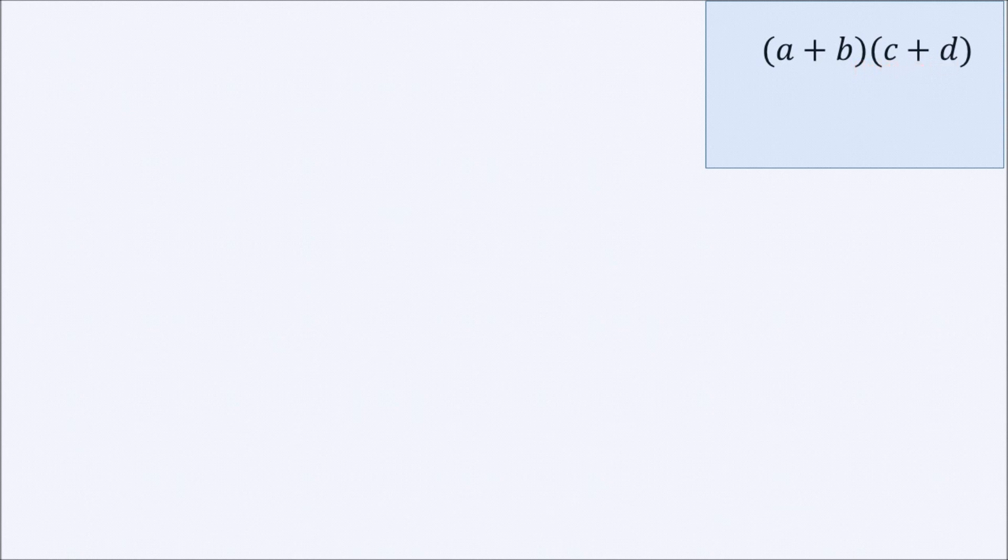If we have two brackets that we would like to multiply, just like these ones, A plus B multiplied by C plus D, what we do is multiply the first element in the first bracket by the two elements in the second bracket.